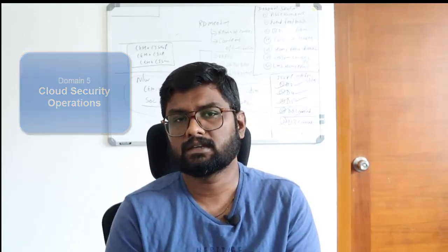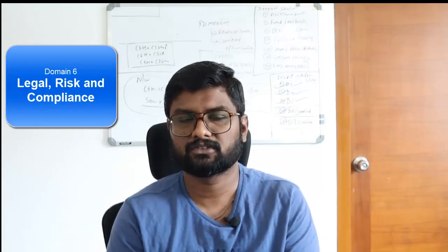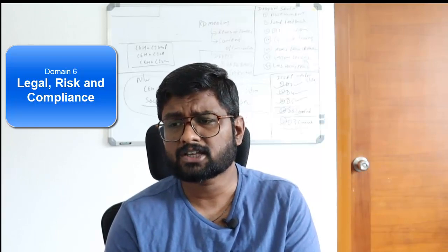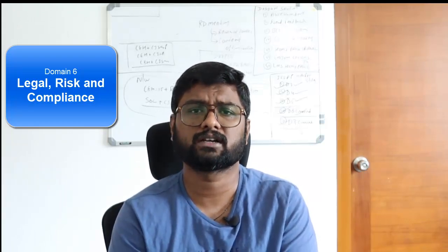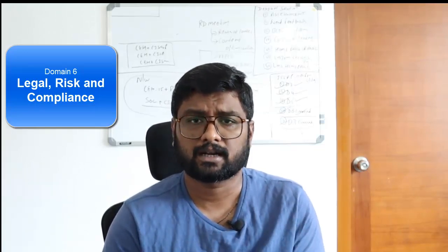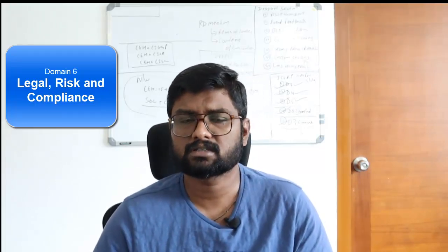Domain 6 is Legal, Risk, and Compliance — one of the bottlenecks of the CCSP. The most important thing is understanding policy types — policy is the primary document by which governance is driven. A contract is the only way to manage governance between two parties: per the contract, both provider and customer need to protect data. Contracts help resolve civil disputes. Understand e-discovery, legal hold, and note that multi-tenancy is the biggest concern for e-discovery.